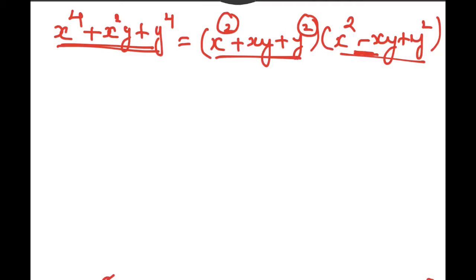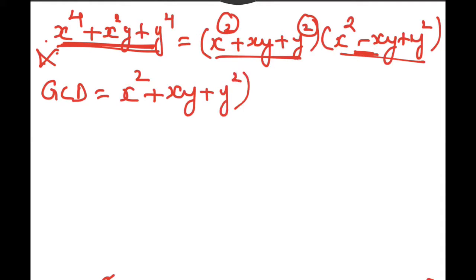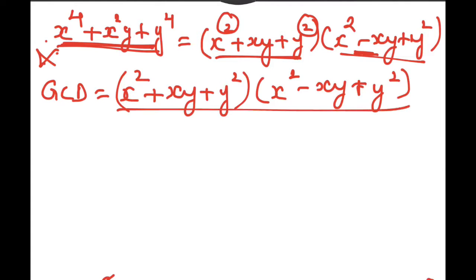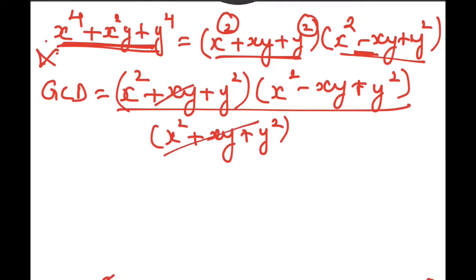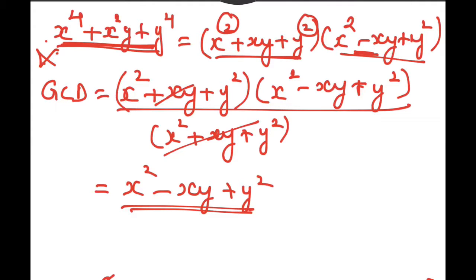How do we apply this formula? GCD is equal to: x to the power of 4 plus x squared y squared plus y to the power of 4, which factors as x squared plus xy plus y squared into x squared minus xy plus y squared. After canceling x squared plus xy plus y squared, our answer is x squared minus xy plus y squared. This sum is actually very easy using this formula.